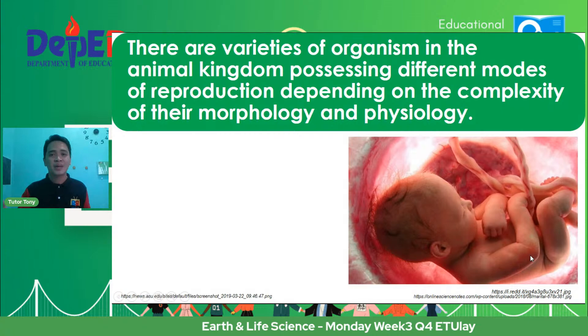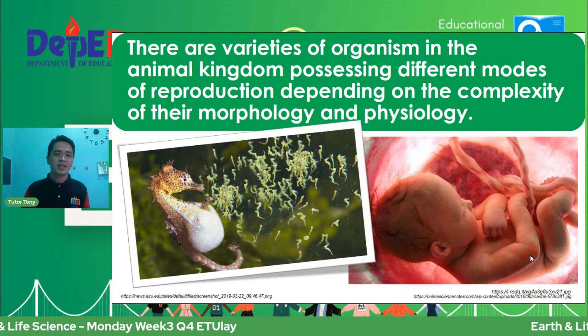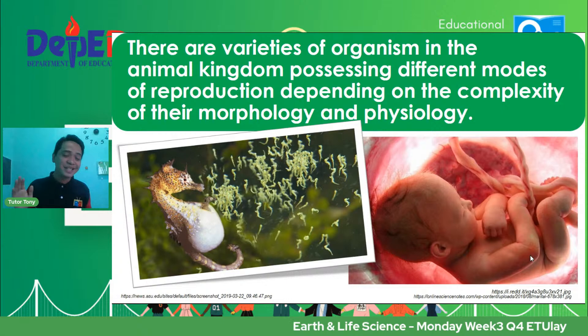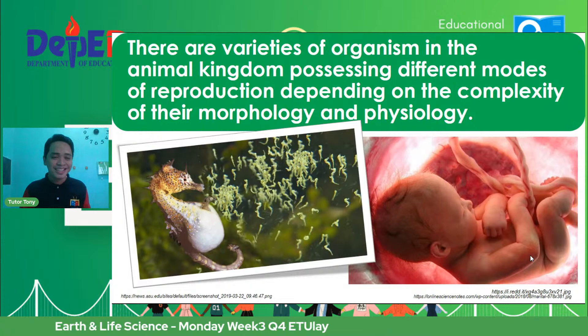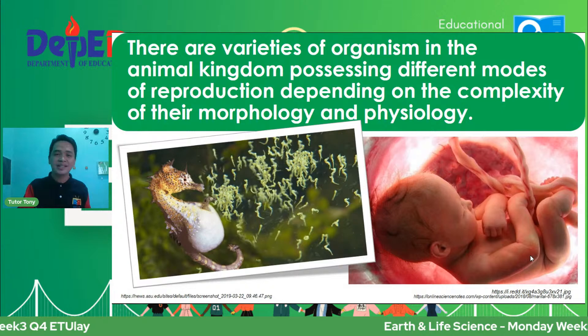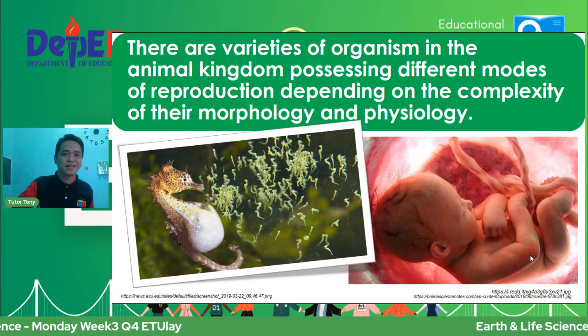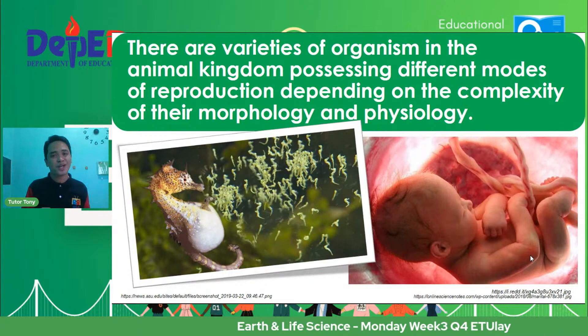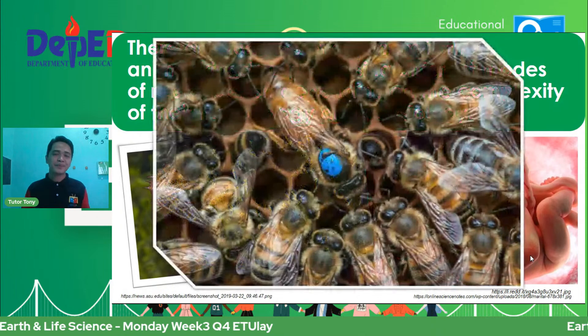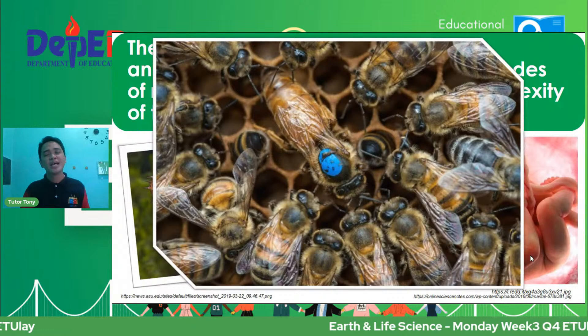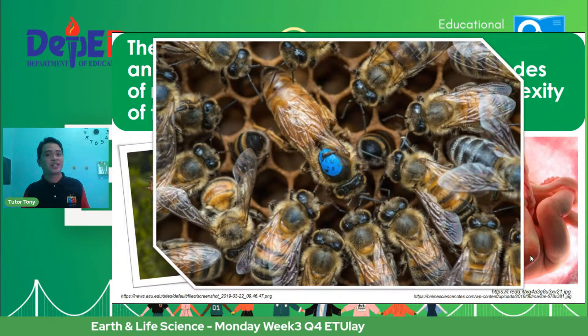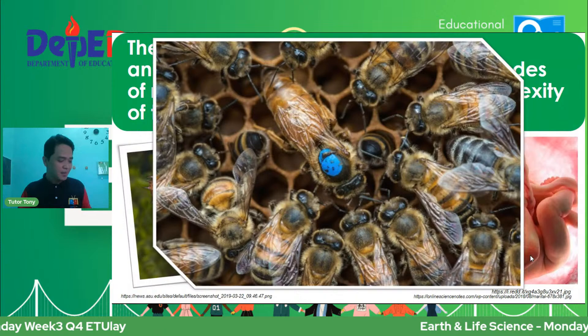One of the interesting animals in terms of reproduction is the seahorse. Instead of the females carrying the babies, si daddy seahorse ang nagpa-perform ng fertilization and eventually sa kanya rin mag-develop ang mga baby seahorses. Siya rin ang magluluwal — so the male performs that function. Depende sa types of organisms. Did you know that bees can actually reproduce by sexual or asexual reproduction? I'll give you another trivia about bees later.